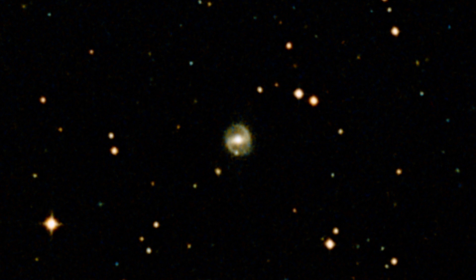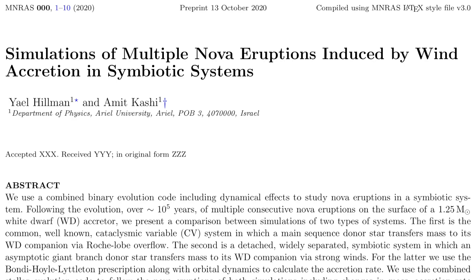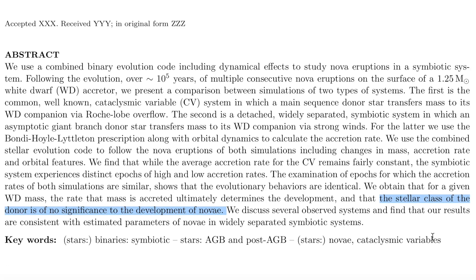A bit closer to the solar situation we face on a long cycle, there is no golden rule when it comes to the binary with which a star is interacting. It's merely the interaction that causes the accretion, accumulation, and blast off.